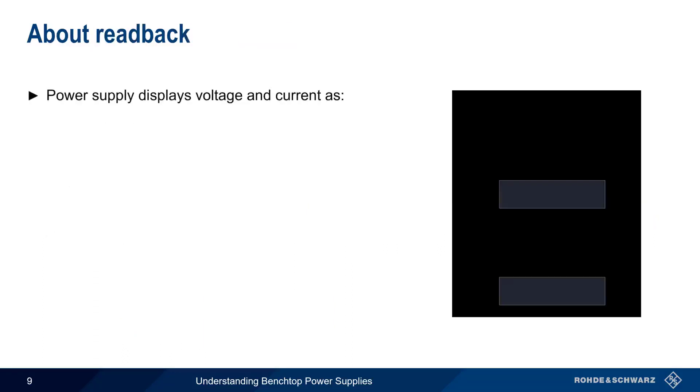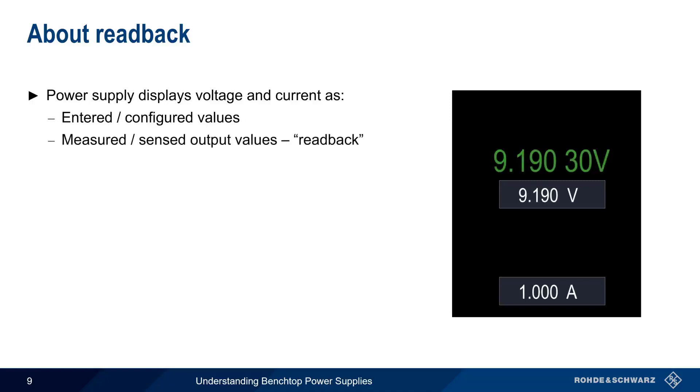Regardless of the output type, many power supplies will show two values for voltage and current. The first set of values are the values entered by the user. The second set of values are the measured or sensed values of what the supply is currently outputting. This function is often called readback. In normal operation, the readback voltage values should be fairly close to the configured value, although later in this presentation, we'll discuss when this might not be the case.